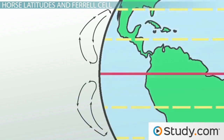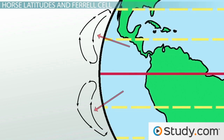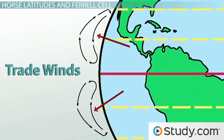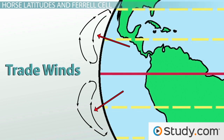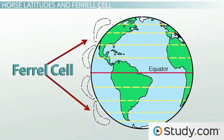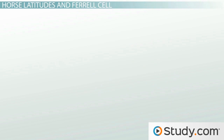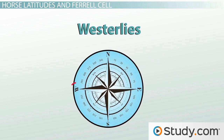Some of the air heads back towards the equator as the warm, steady breezes of the trade winds, but much of it keeps heading towards the poles, creating our next cell, the Ferrel cell. The winds that blow towards the poles and create the Ferrel cells are the westerlies, which you can remember because they come from the west and blow to the east.